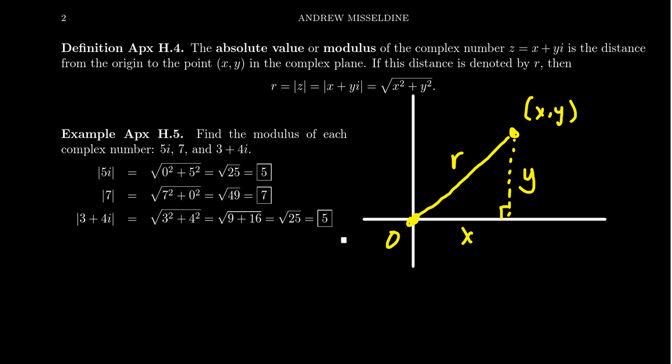So if we take some complex numbers — for example, let's start with the complex number 5i. This is a purely imaginary number. The modulus of 5i would be the square root of 0 squared plus 5 squared, which is the square root of 25, so that's 5.